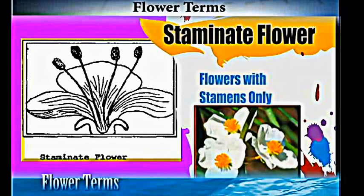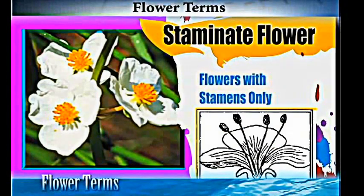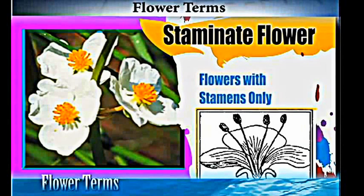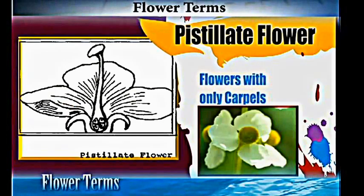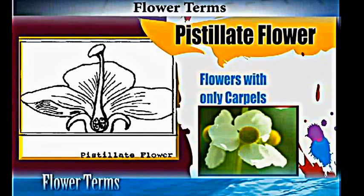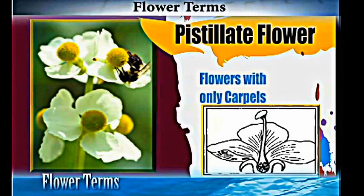Staminate flowers are flowers with stamens only — that is, flowers with male parts only. The pistillate flowers, on the other hand, are flowers with carpels only.